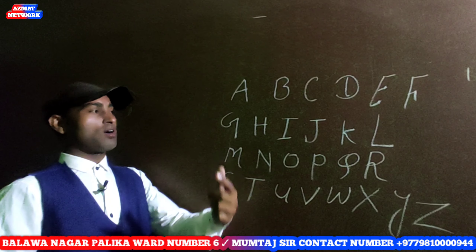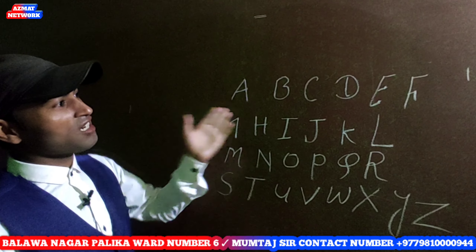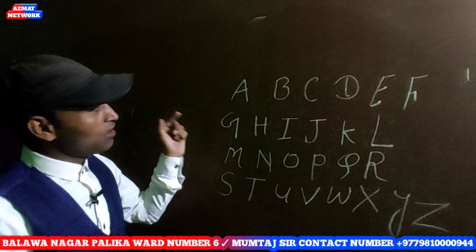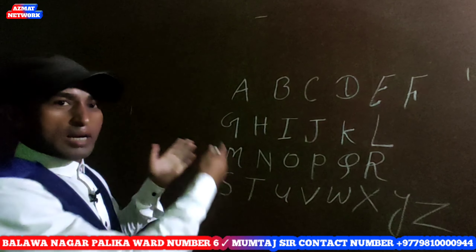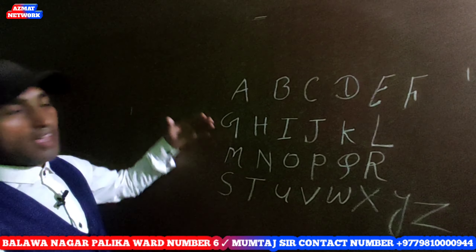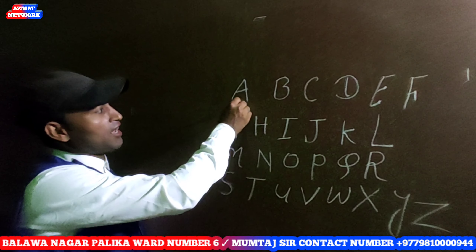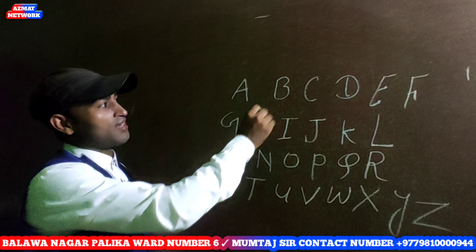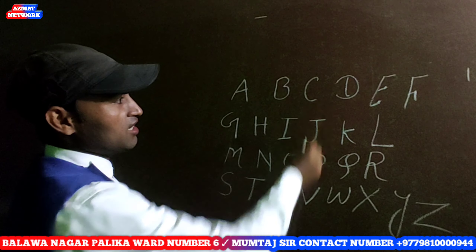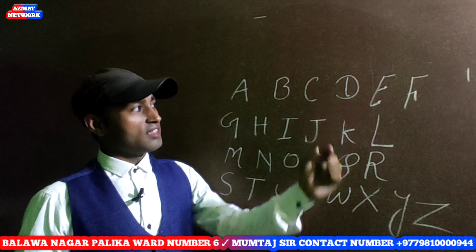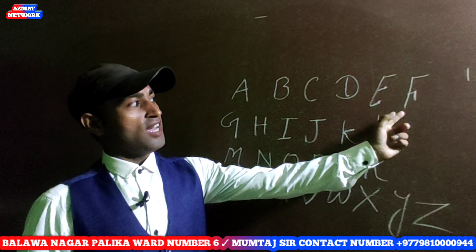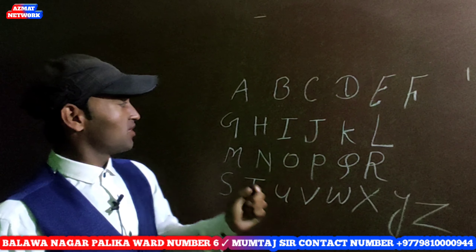So you can see here clearly how to write capital letters in English. So repeat again here: A, B, C, D, E, F.